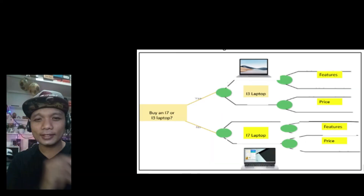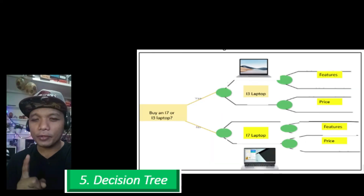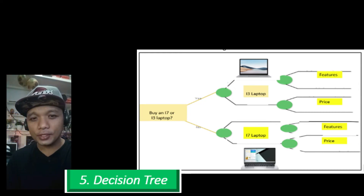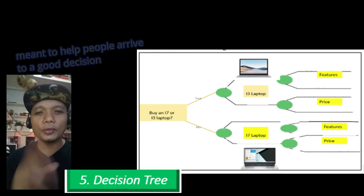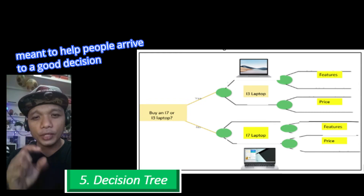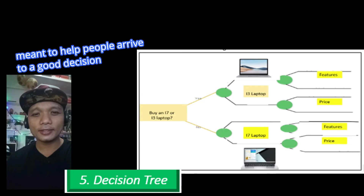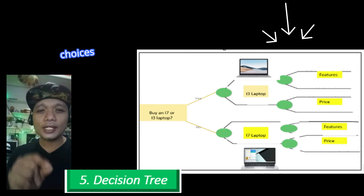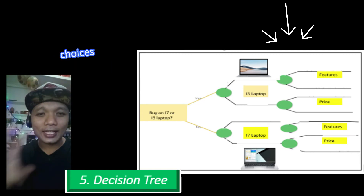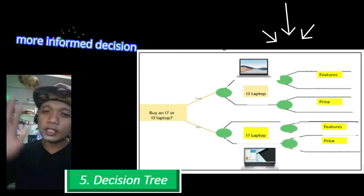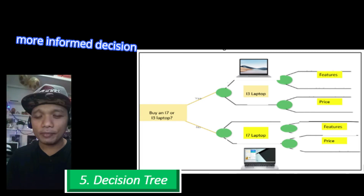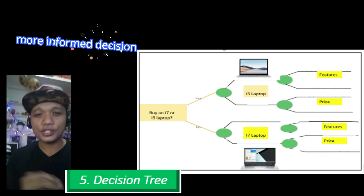Number 5 is the Decision Tree Analysis. This graphic organizer is critical — it is meant to help people arrive at a good decision. It presents the courses of action or the choices in detail. Once you have seen all the information, you will arrive at a more informed decision.